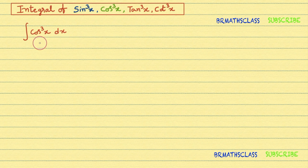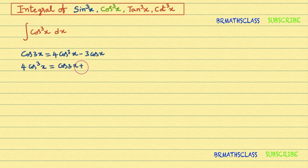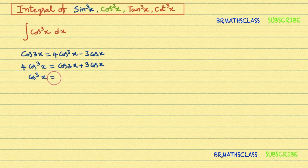I will do this problem by using the cos3x formula. From the cos3x formula, we need to extract cos³x. Taking minus 3cosx to the other side, you get 4cos³x = cos3x + 3cosx. Dividing the complete equation by 4 to get cos³x, we get cos³x = (1/4)cos3x + (3/4)cosx.